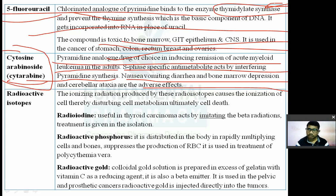The anti-metabolite class includes methotrexate, 6-mercaptopurine, thioguanine, 5-fluorouracil, and cytosine arabinoside. All of these are anti-metabolites.